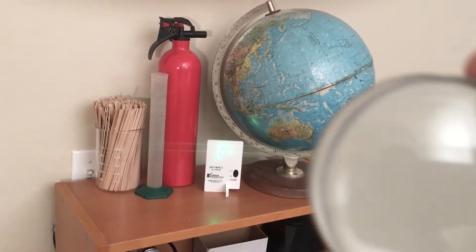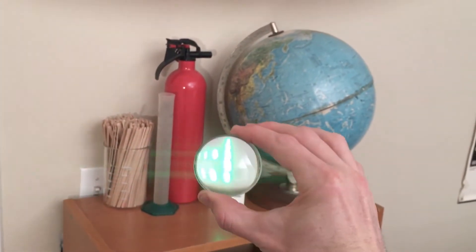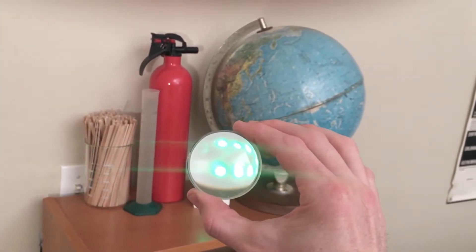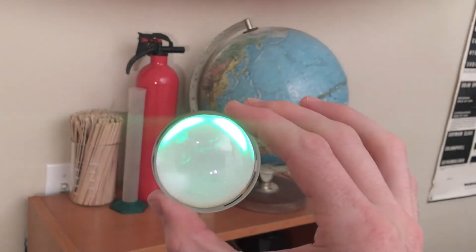Another quick way to find the focal distance is to look at the point when the background flips from being right side up to upside down. Then the lens is one focal point away from your face.